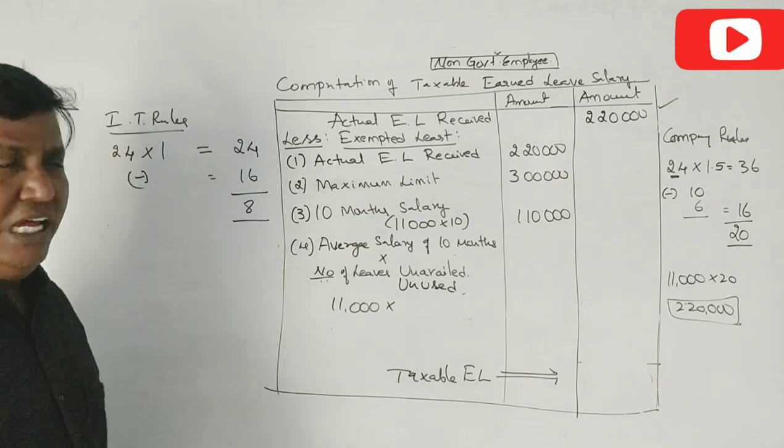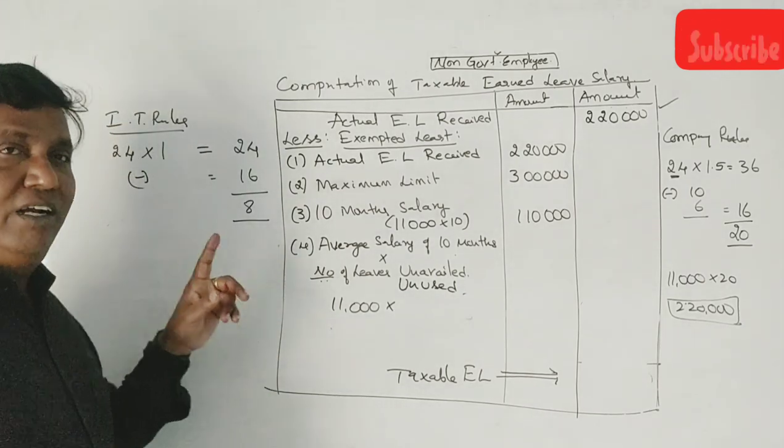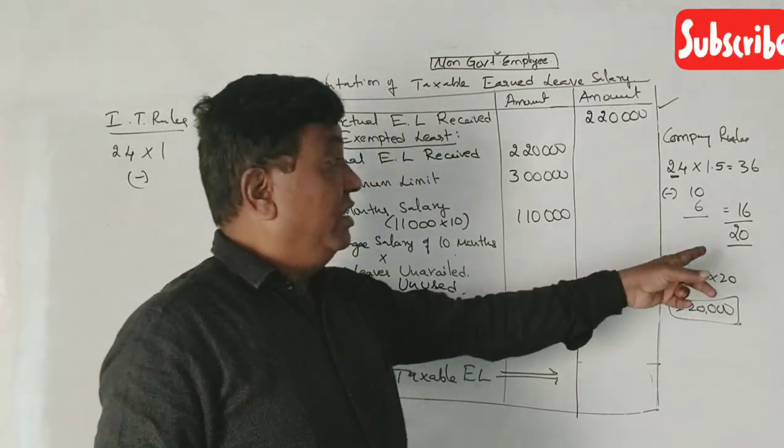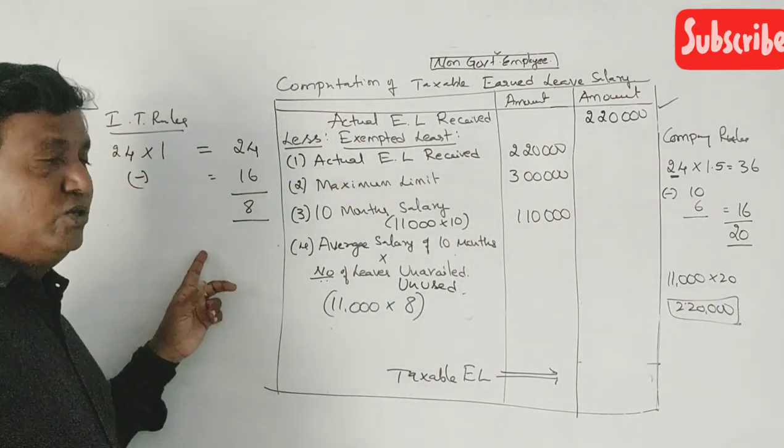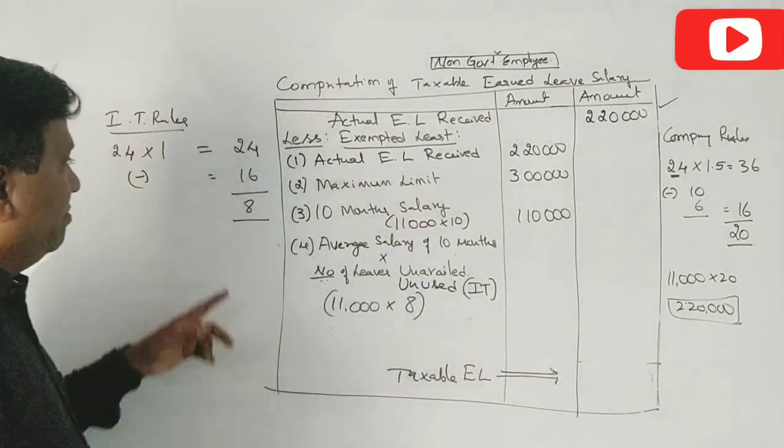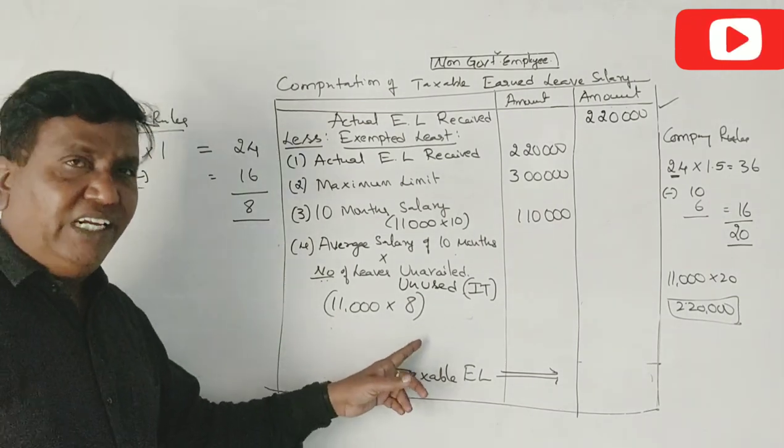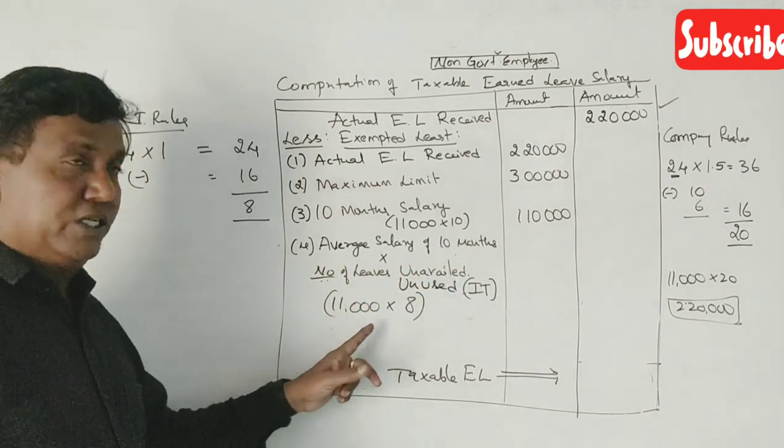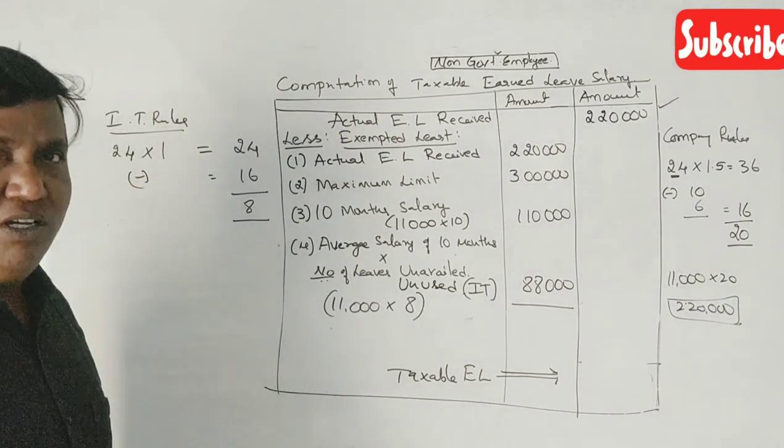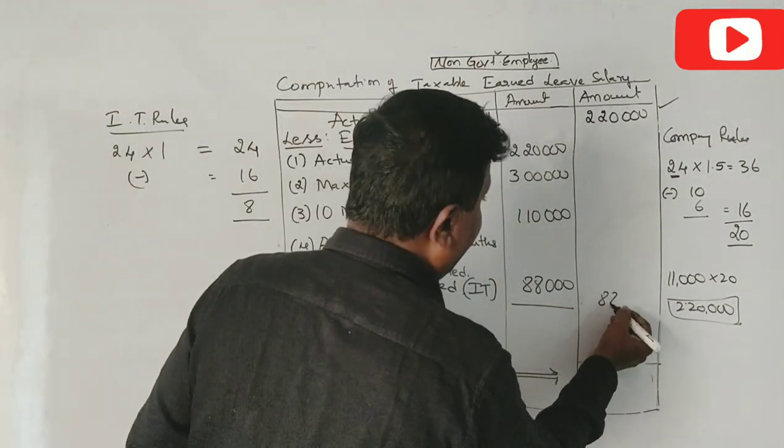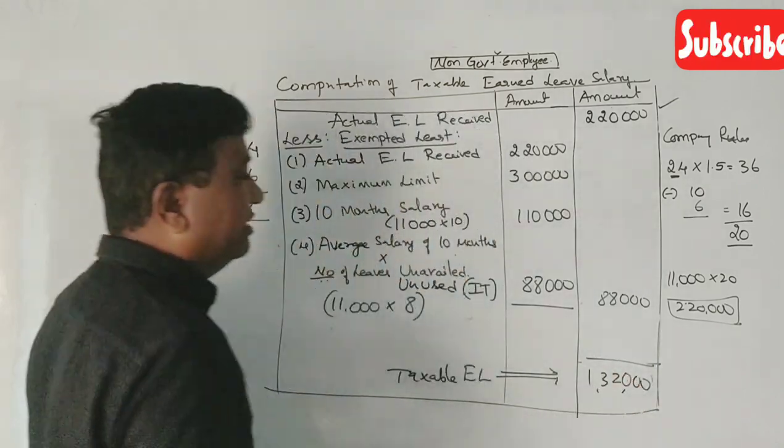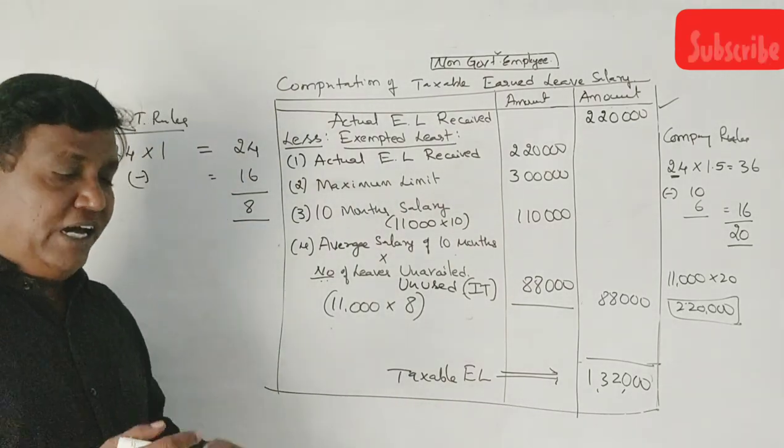Income tax rules: What is the case? Company rules is one case, income tax rules is another case. Now, number of leaves unavailed as per IT rules. IT rules calculation: average salary of 10 months, Rs. 11,000 into 8 is Rs. 88,000. So Rs. 88,000 minus exemption equals Rs. 1,32,000. This is the answer.